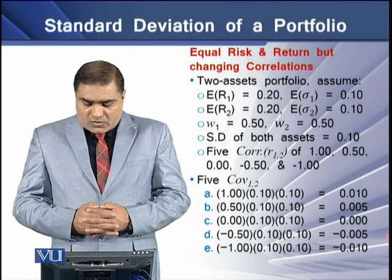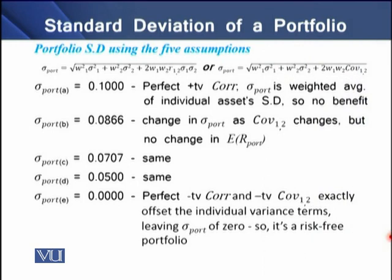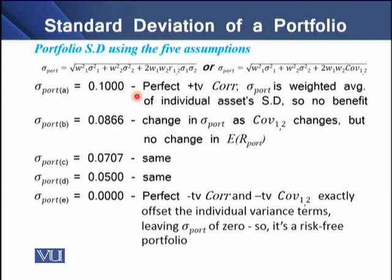When we determine the individual portfolio's standard deviation in all five cases, we observe the following: portfolio A has a standard deviation of 0.10, portfolio B is 0.08, portfolio C is 0.07, and portfolio E is 0. For portfolio A, since we have perfect positive correlation, the portfolio's riskiness is the weighted average of the individual assets' standard deviations, so there is no benefit of diversification.